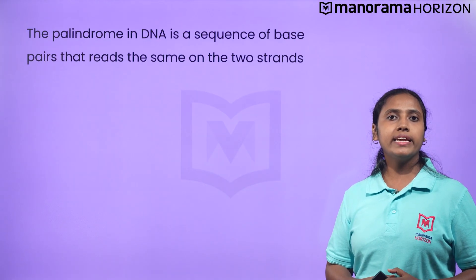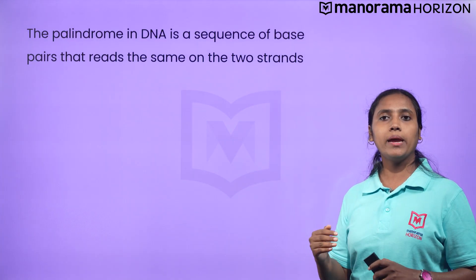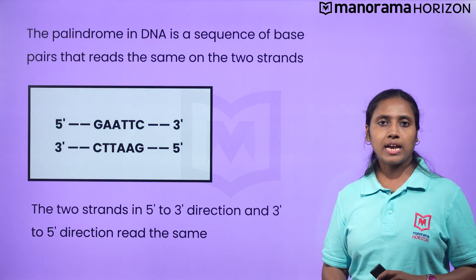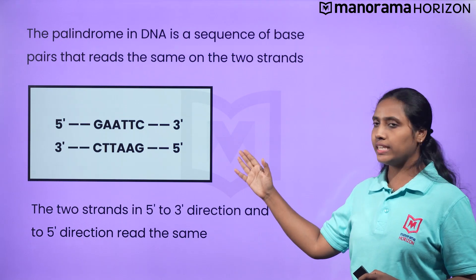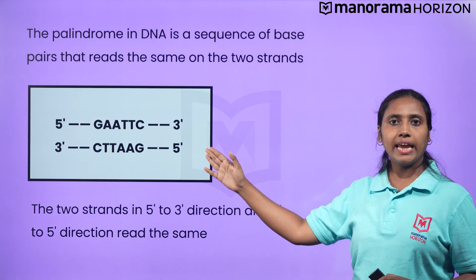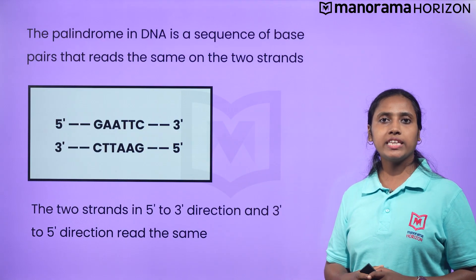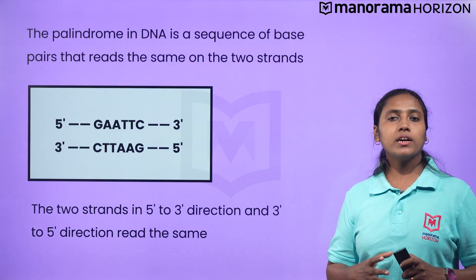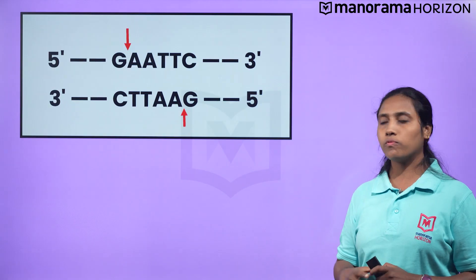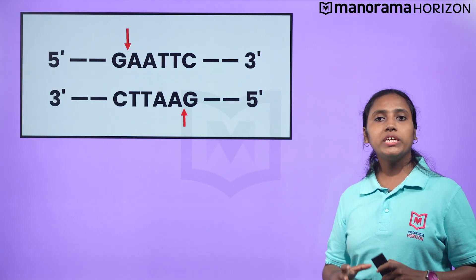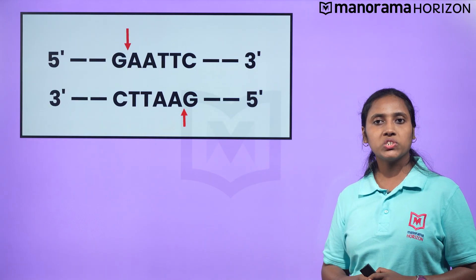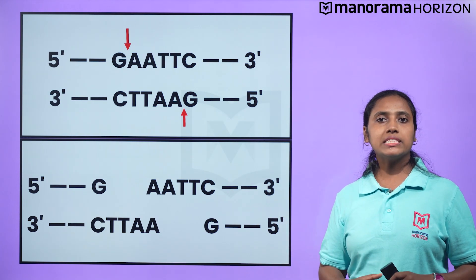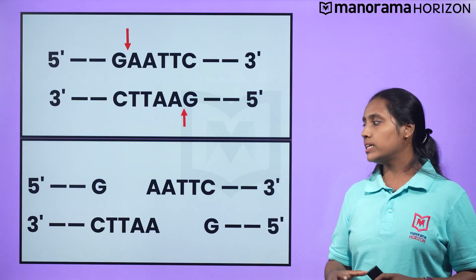The palindrome in DNA is a sequence of base pairs that reads the same on the two strands when the orientation of reading is kept the same. For example, the 5' GAATTC and the 3' CTTAAG sequences read the same on both strands from both directions. The restriction enzyme cuts the strand of DNA a little away from the center of the palindrome sites, but cuts between the same two bases on the opposite strands, leaving single-stranded portions at the ends.